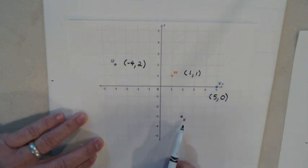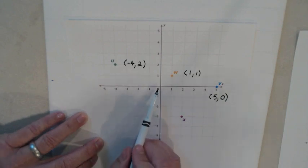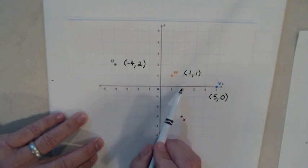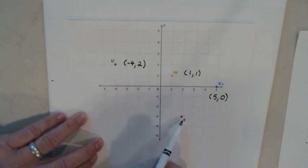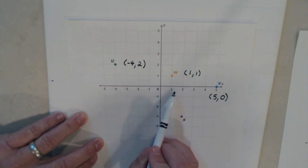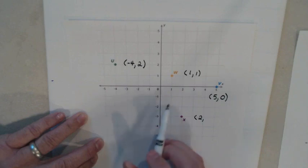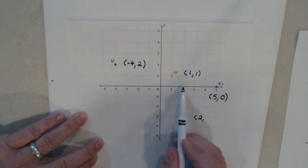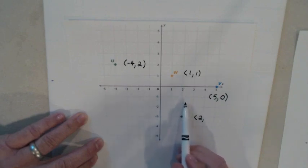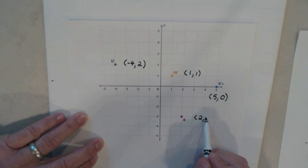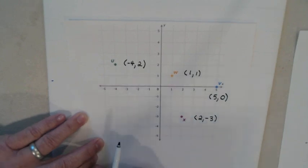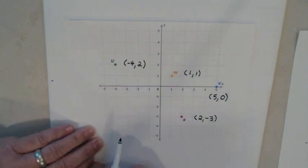Now I'm going to write down the coordinates for point X. Start at the origin. I need to go in this direction to get to X — one, two — so two is my x-coordinate. Then I need to go down: one, two, three. Since I went down, that's negative three. Those are the coordinates for X: (2, -3).